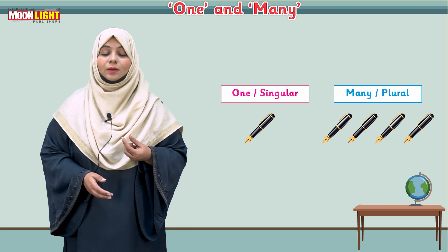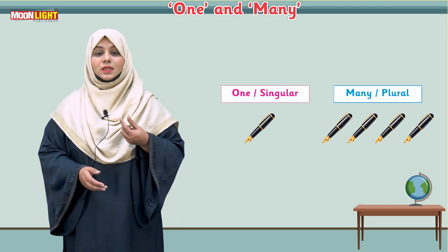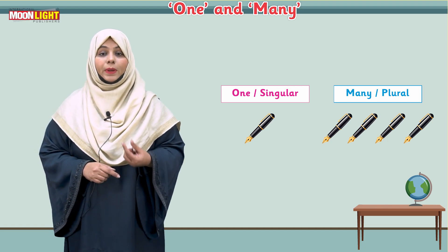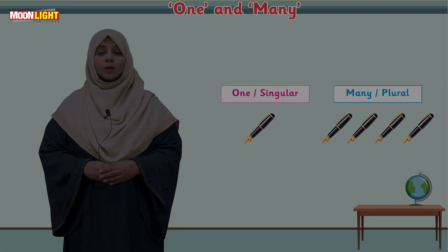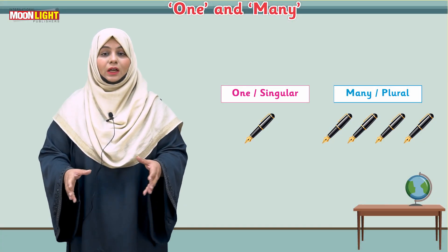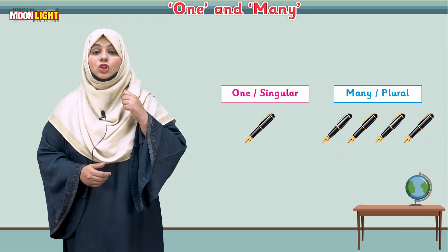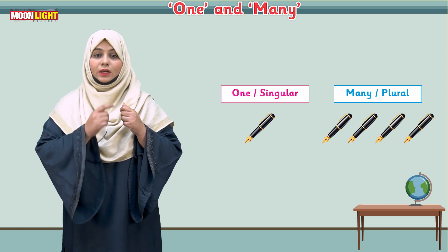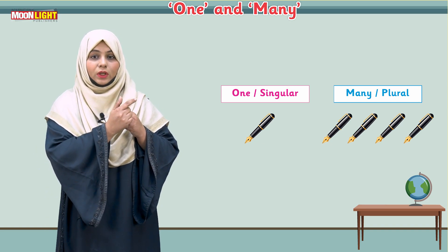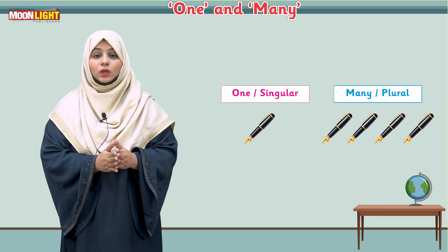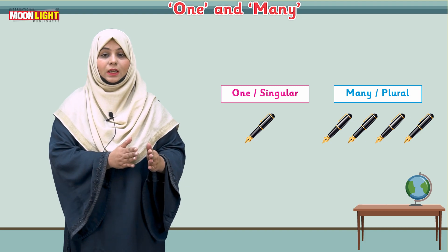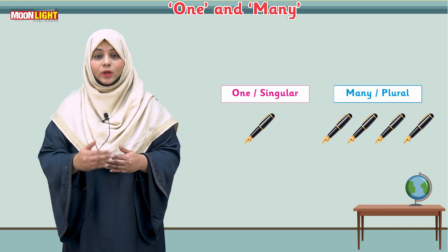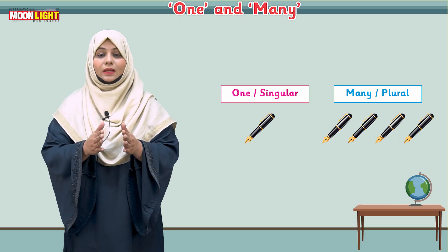For example, hold a pen in your hand and tell them: 'This is one pen, so pen is singular.' After that, take out two or three more pens and show them to the students. Ask how many pens there are — they will count one, two, three. Now they are more than one, so they will be plural.